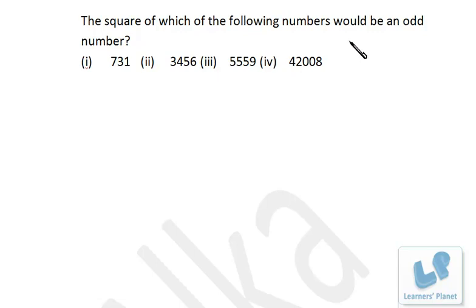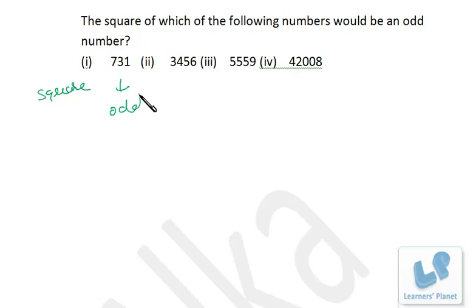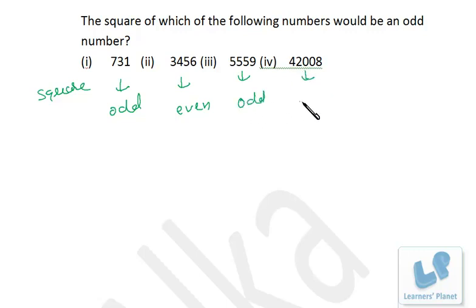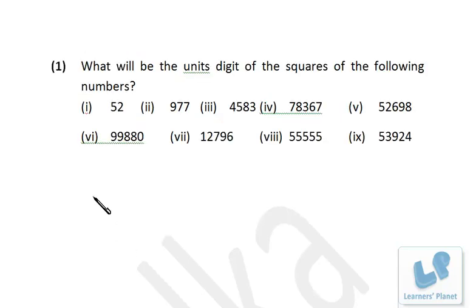Example: which of the following numbers will have an odd square? An odd number gives an odd square; an even number gives an even square. Similarly, we can find the unit digit of squares of the given numbers.